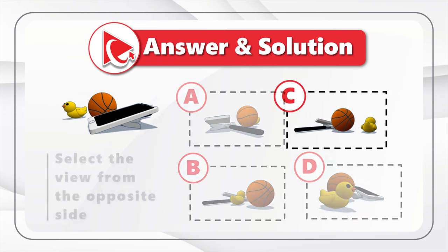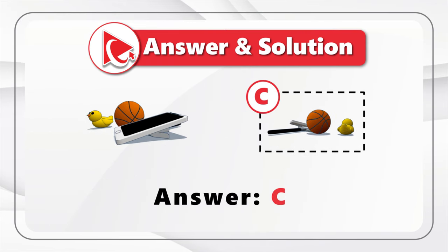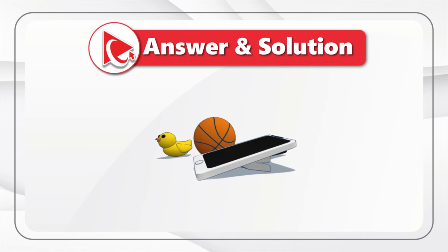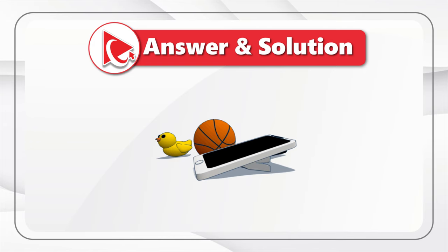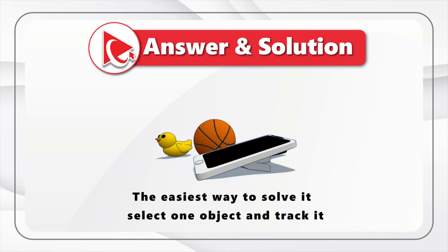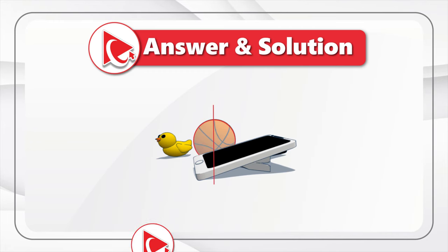If your answer was choice C, you answered correctly. There are four objects on the original three-dimensional image: a duck, a basketball, a smartphone, and a hammer — which is barely noticeable on the original picture. The easiest way to solve this challenge is to select one object and track it on the opposite side. I selected the duck, but you can also select the hammer or smartphone. It's a little harder with the ball because it's in the middle and it's a symmetrical object.